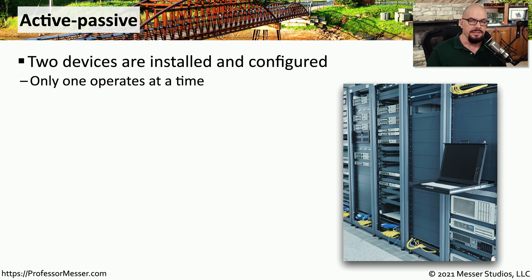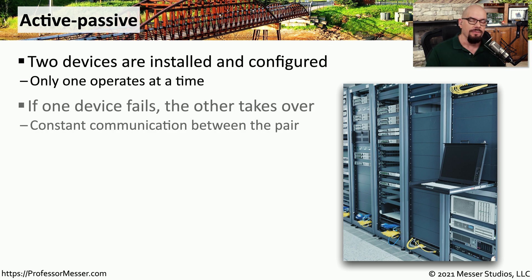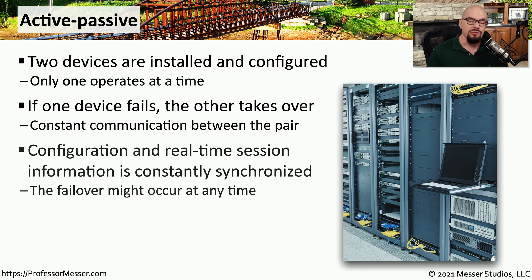One way to implement redundant systems is to purchase two devices, but have only one of those devices operate at any particular time. If the first device fails, the second device recognizes that the first device is no longer communicating and takes over the process. This usually means that the second device needs to be online, available, and constantly updating its configuration settings so that if the first device fails, it can take over immediately with exactly the same config.